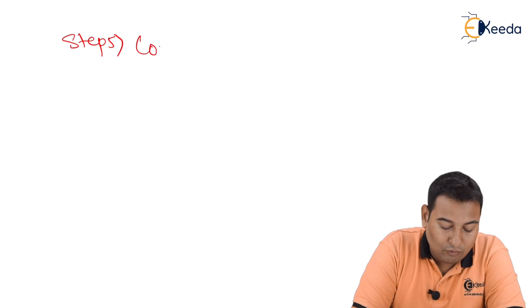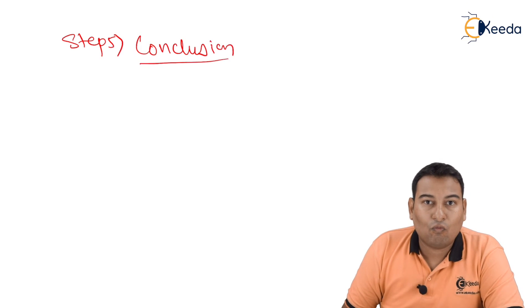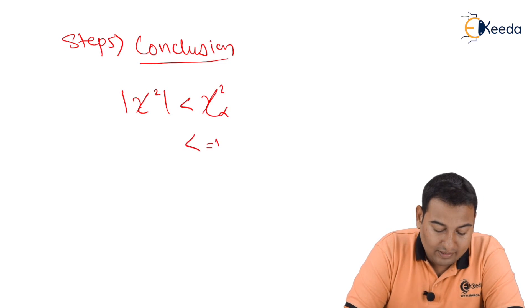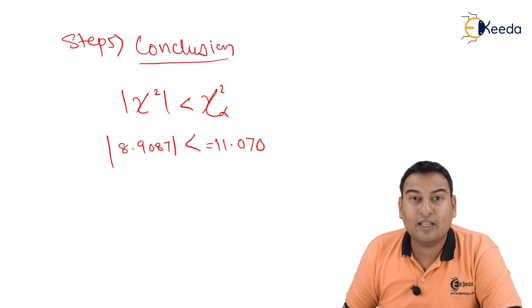Let's move on. Step number five is conclusion. What is conclusion? Mod of chi-square is less than chi-square alpha. Chi-square alpha we got as 11.070 and this mod value that we got is 8.9087. So it is less. What does that indicate?